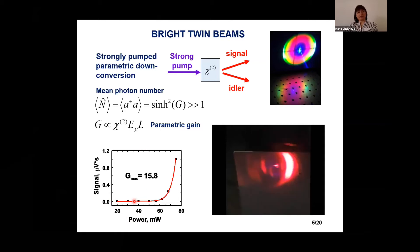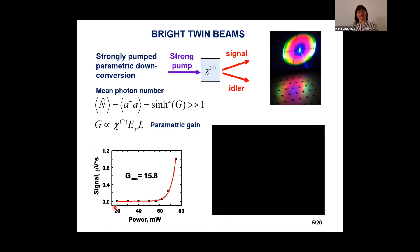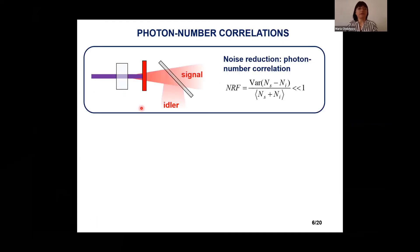For instance, this is an example, a very old example where we made this gain reach 16 by increasing the pump power. And this is how this gain can be measured by measuring the output of the nonlinear crystal versus the pump power and by fitting this dependence. And so these beams, as you see, can be very bright because if you take this sinh squared of 16, it will be a lot, it will be like a laser brightness. And what is non-classical about these beams? Apart from the quadrature squeezing, which I will not discuss today, although we did measure it.